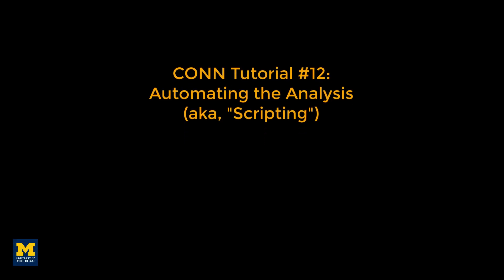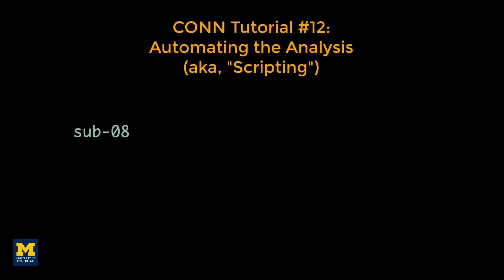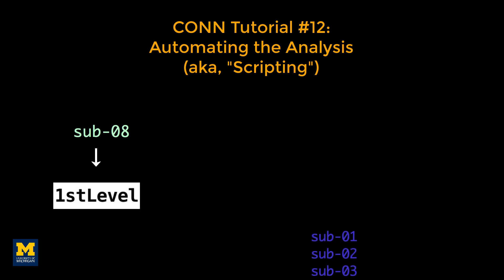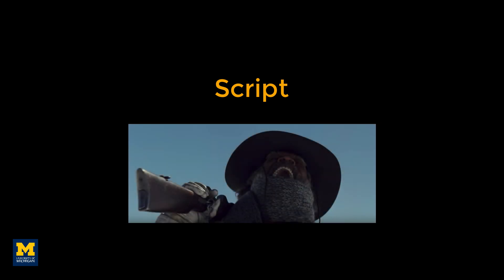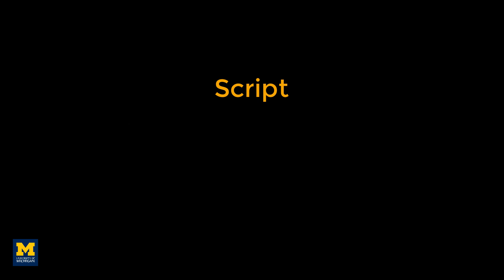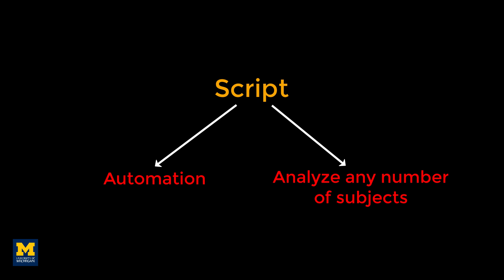After you've pre-processed and set up a model for a single subject, you'll need to do the same steps for all of the subjects in your data set. This may seem tedious but doable. An alternative is to script your analysis. Just as an actor has a script which tells him what to say, where to stand, and where to move, you can write a script that tells your computer how to analyze your data sets. This has the double benefit of automating your analyses and being able to analyze data sets of any size. The code for analyzing two subjects, or 200, is virtually identical.